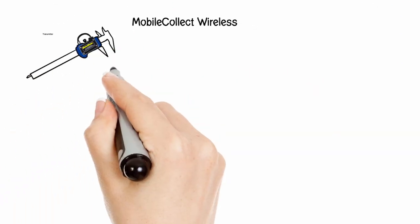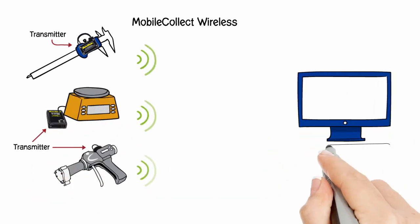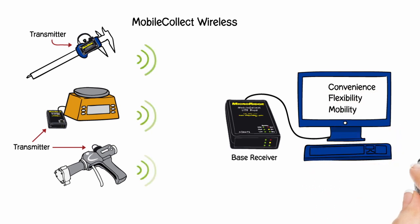By adding a transmitter to each gauge and receiver to the PC, MobileCollect Wireless offers gauge interface functionality but without the connecting cables, providing enhanced convenience, flexibility, and mobility.